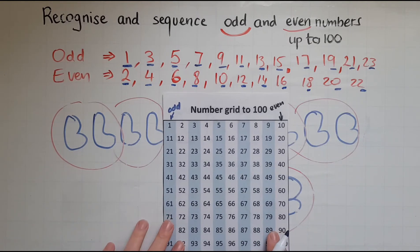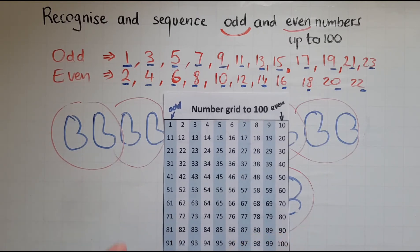So all we need to do to find out whether a number is odd or even is to look at the units. So let's say I've got number 32. What do I look at? It's the unit.